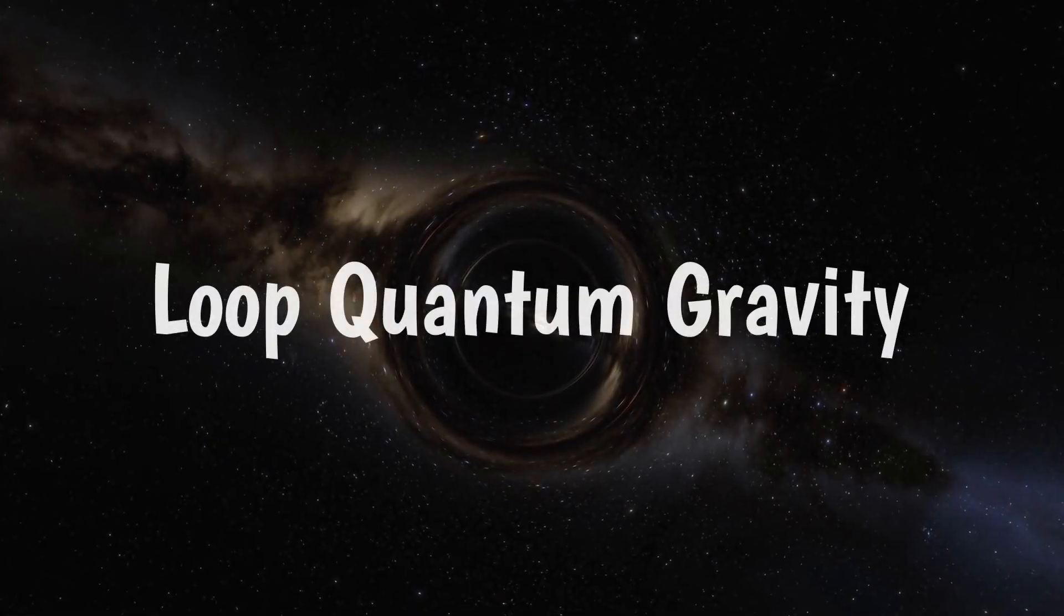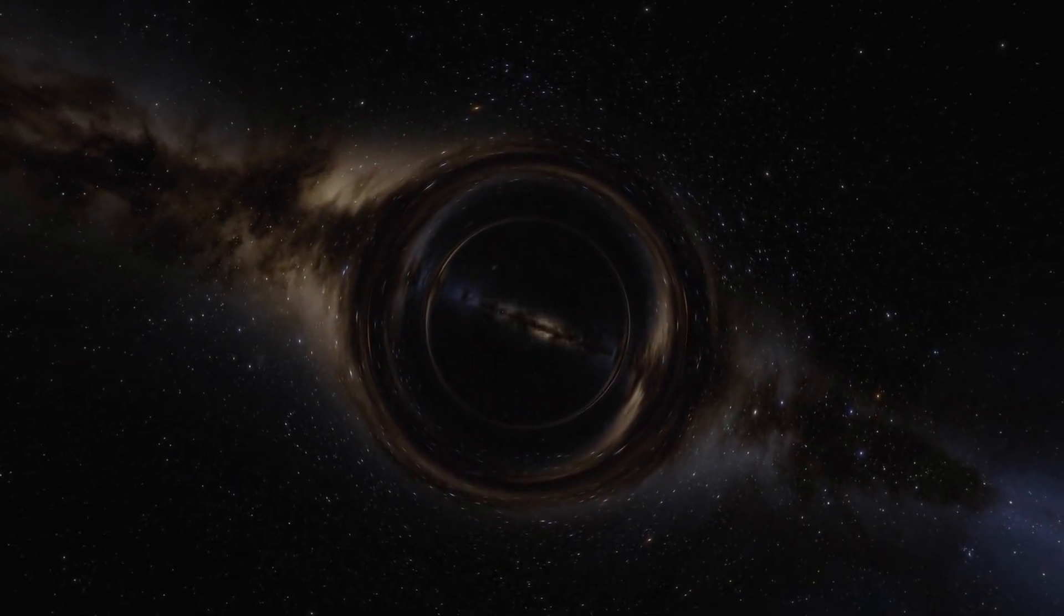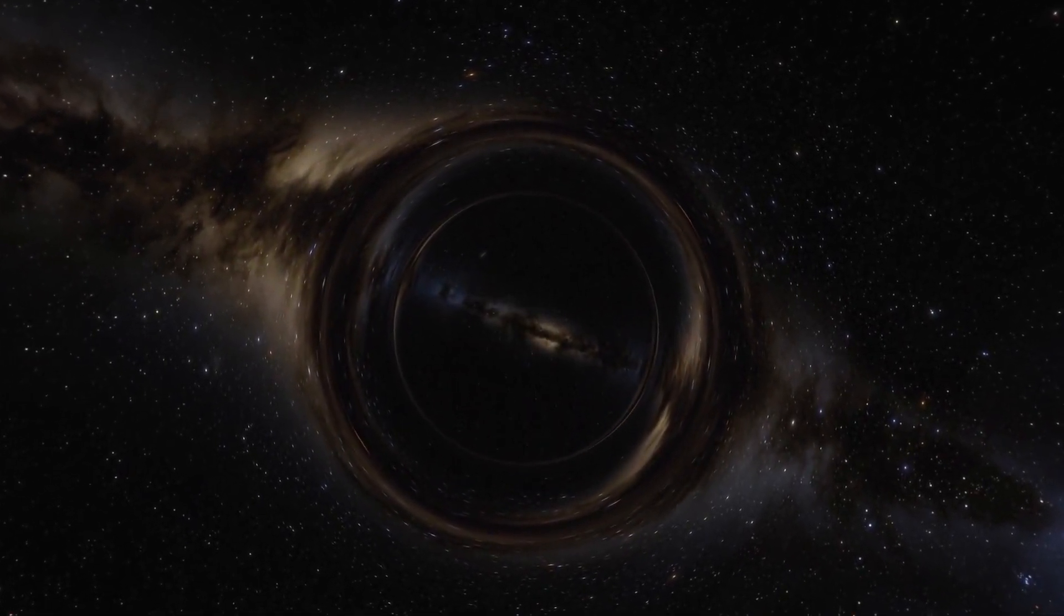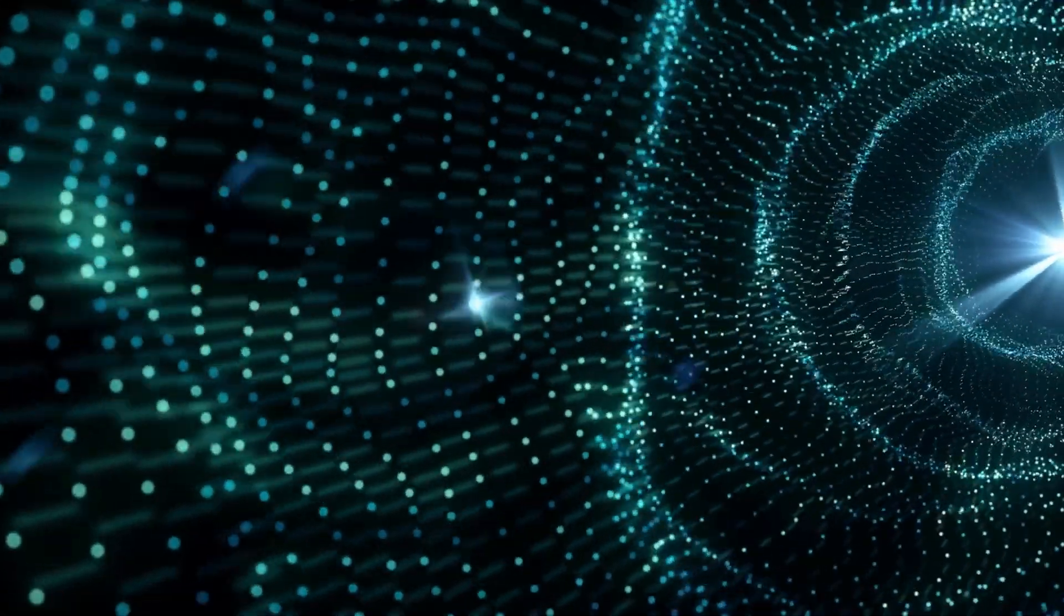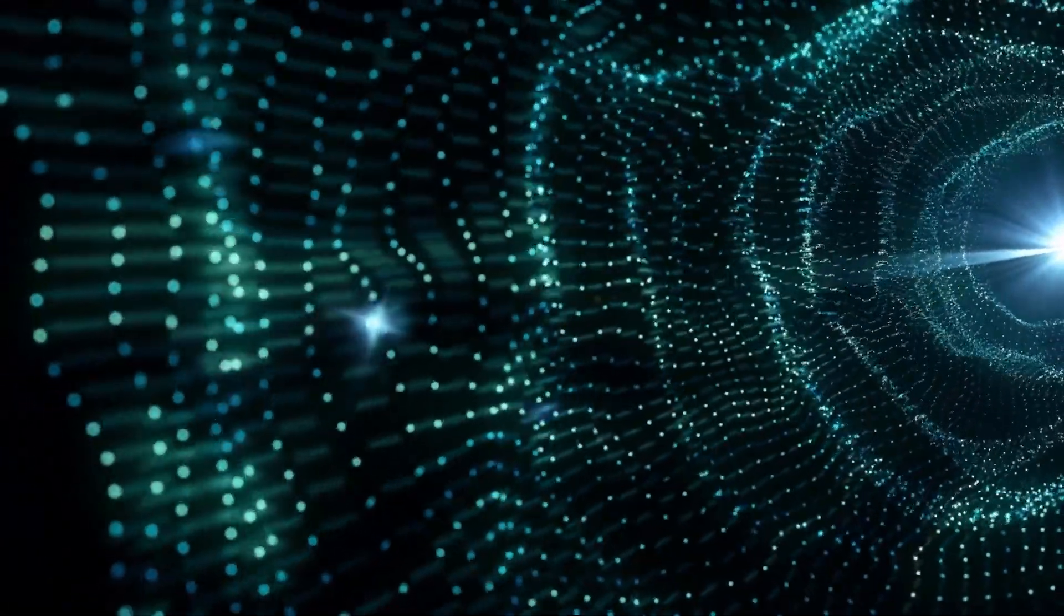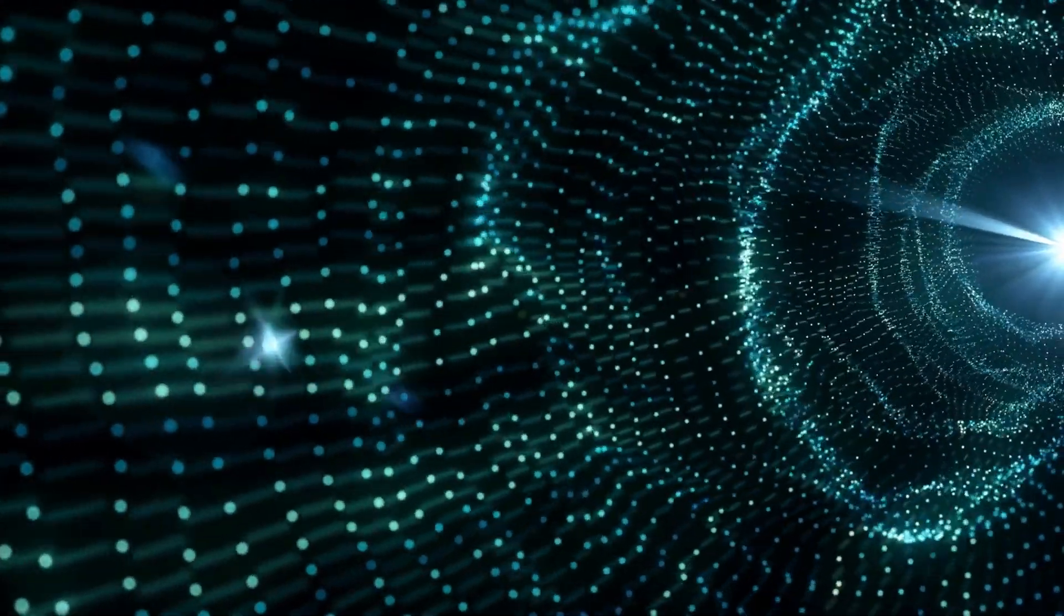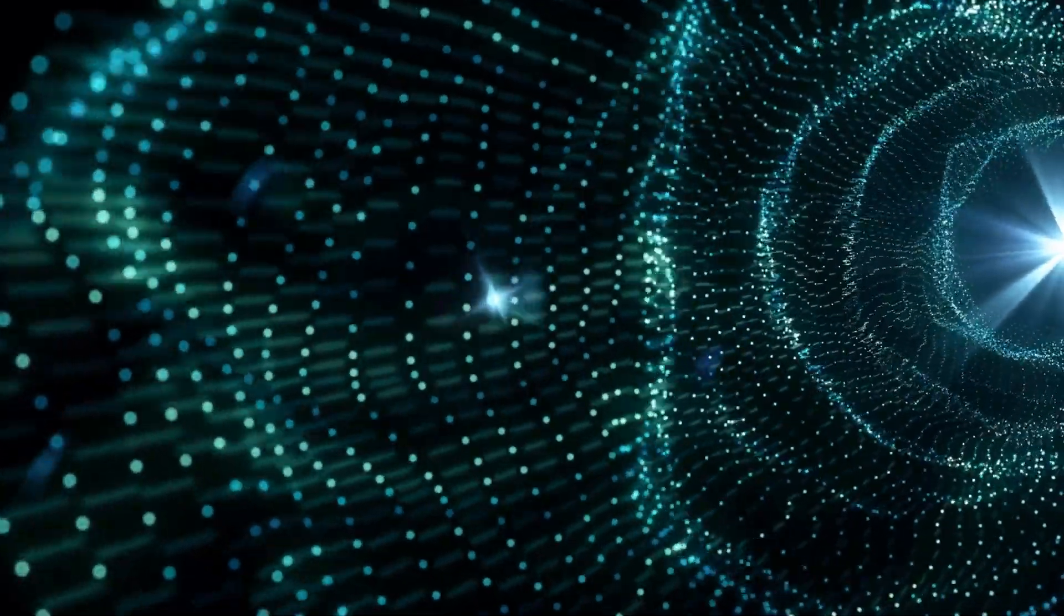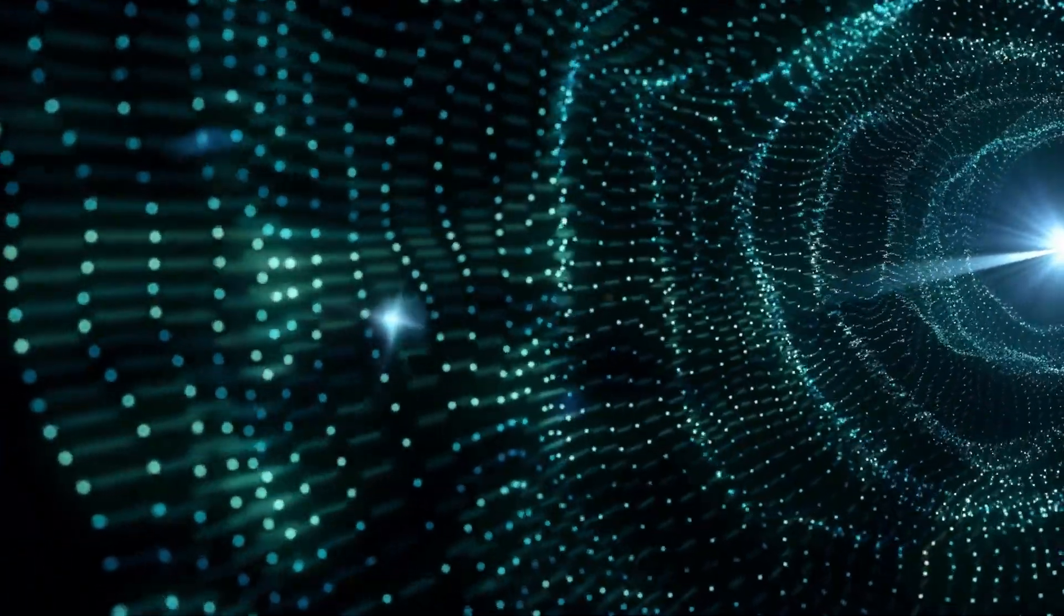Loop quantum gravity is another theory that proposes a different way of understanding the fabric of space and time. According to this theory, space is not continuous, but made up of tiny discrete units, or quanta, much like how light is composed of photons. These quanta of space can be visualized as a fine, indivisible mesh or network.